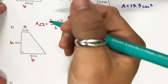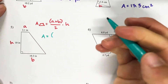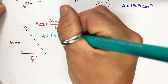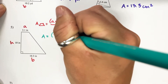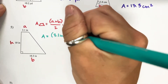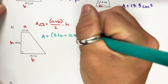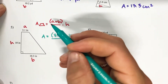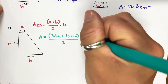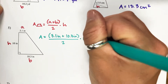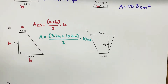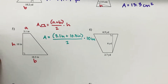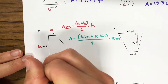So I have area equals, in parentheses, a plus b — so 3.1 inches plus 10.3 inches. We're going to add those together and then divide by 2. After that we're going to multiply by our height, which is 10 inches. PEMDAS tells us — let's make that note on our paper — we must use PEMDAS, or please excuse my dear Aunt Sally, the order of operations.